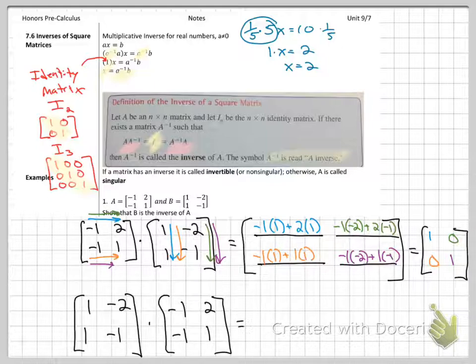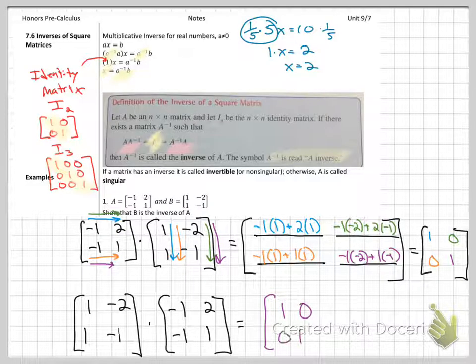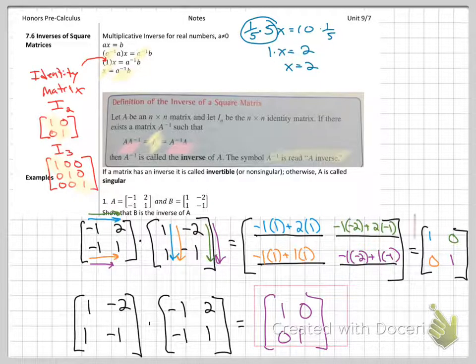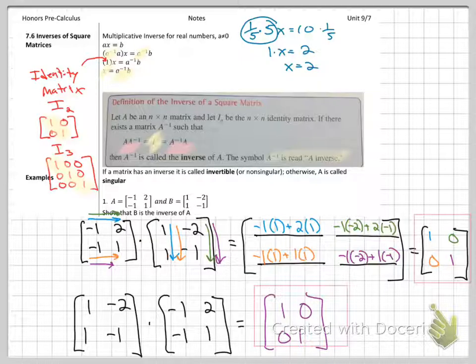Go ahead and do the bottom one. As a heads up, you will get 1, 0, 0, 1, or you didn't do it right. So practice your matrix multiplication. Since we got the identity matrix both times, if you took your time and did it the second time, you can say A and B are inverses.